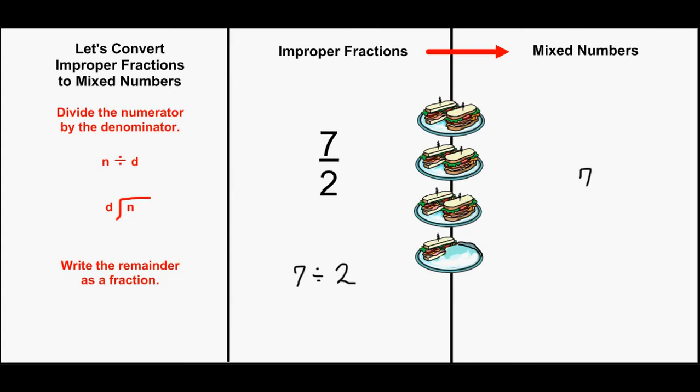Here's 7 divided by 2. 7 divided by 2 is 3. 3 times 2 is 6. Subtract. 7 minus 6 is 1.